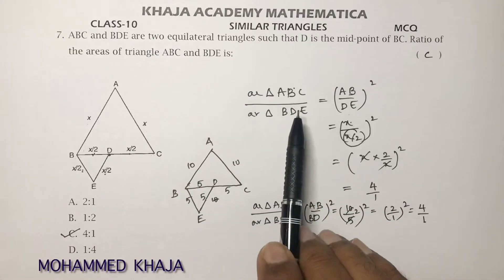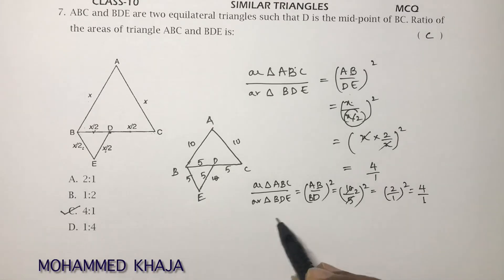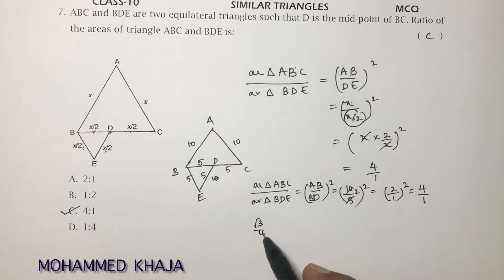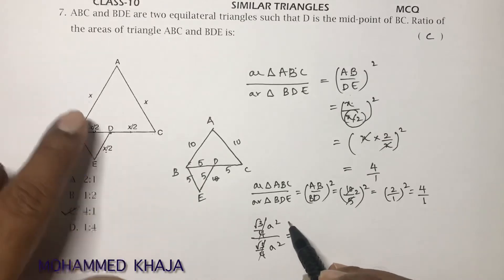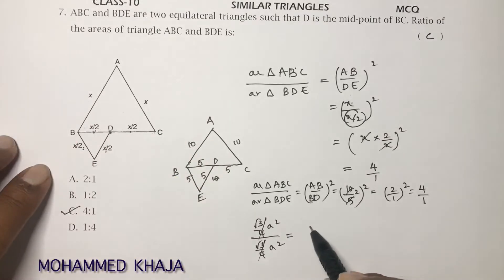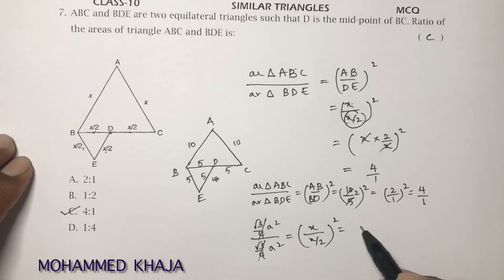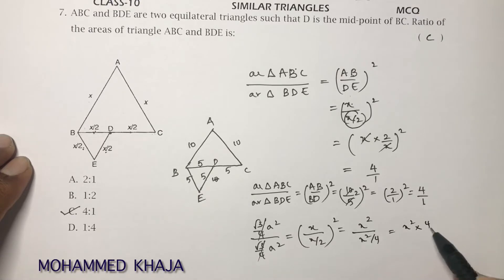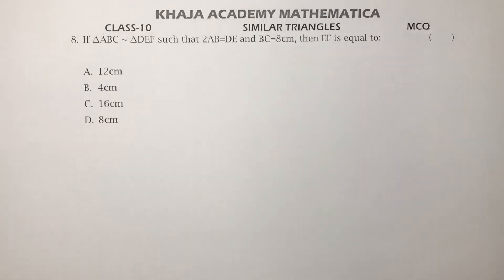Another method: use the equilateral triangle area formula directly, which is (√3/4)·a². For triangle ABC with side X, the area is (√3/4)·X². For triangle BDE with side X/2, the area is (√3/4)·(X/2)² = (√3/4)·(X²/4). The (√3/4) cancels, leaving X² divided by (X²/4) = X² × 4/X² = 4. So the ratio is 4:1.